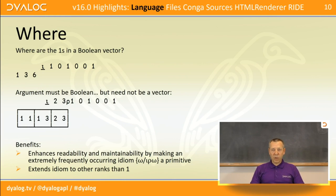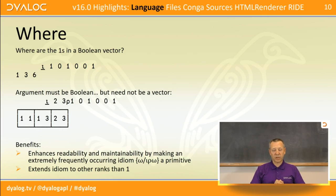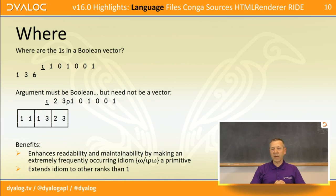Now some slightly more interesting primitives that provide new functionality. There's a WHERE function which you could argue is the same as the omega-slash-iota-omega primitive, except it's extended to higher ranks. Having it available as a primitive allows you to synthesize bigger and more powerful idioms.